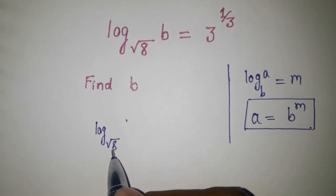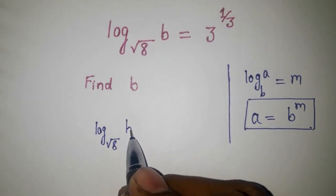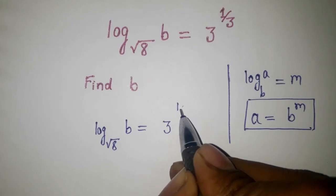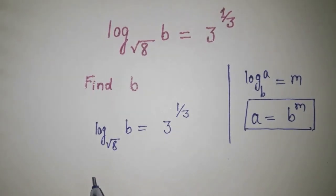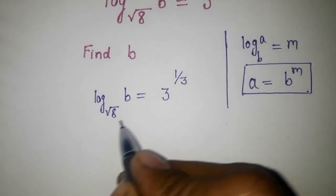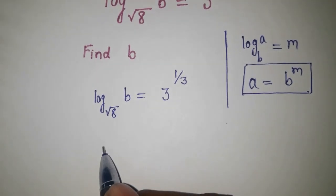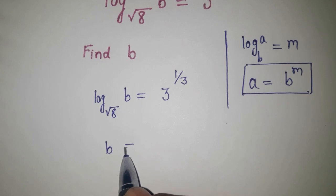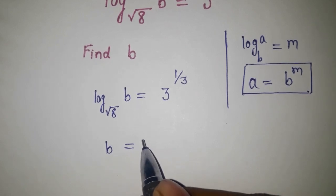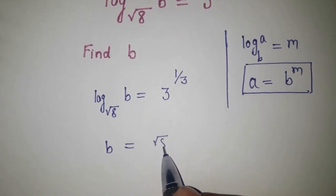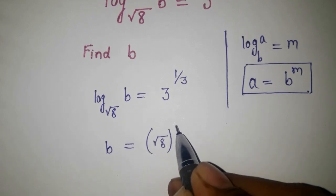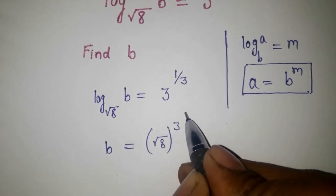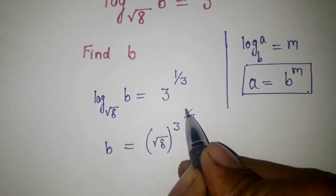Log base root under 8 of B equals 3 to the power 1 by 3. So that can be written as B equals root under 8 raised to the exponent 3 to the power 1 by 3.